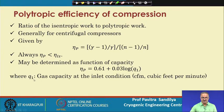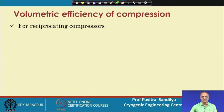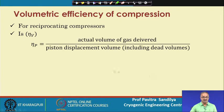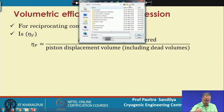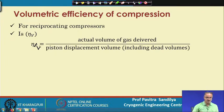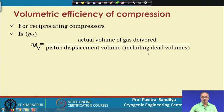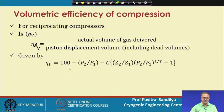Volumetric efficiency is generally used for reciprocating compressors. It is defined as the actual volume of gas delivered divided by the system displacement volume, including the dead volume. The volumetric efficiency depends on the pressure ratio, the ratio of the compressibility factors of the gas at the inlet and outlet conditions, the value of gamma, and C — which is the clearance volume to displacement volume ratio.